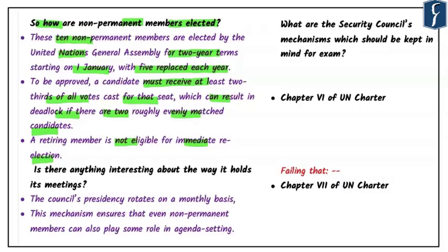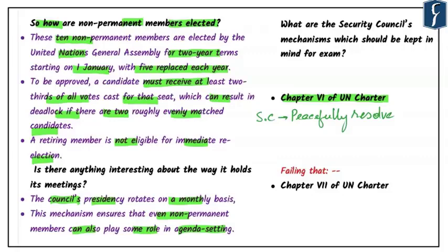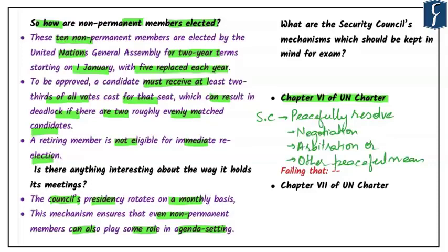The Security Council's presidency rotates on a monthly basis, ensuring even non-permanent members can play a role in agenda setting. Chapter 6 of the UN Charter is very important — it mentions that the Security Council aims to peacefully resolve international disputes, authorizing the Council to call on parties to seek solutions via negotiation, arbitration, or other peaceful means.